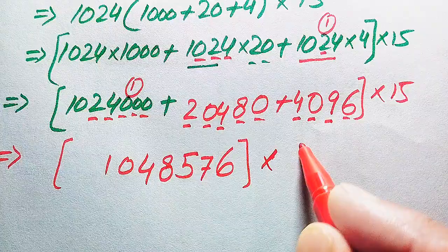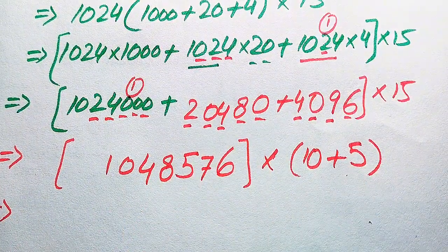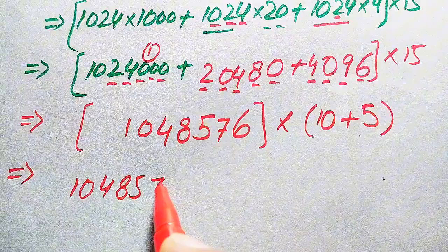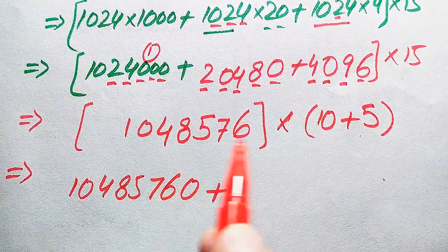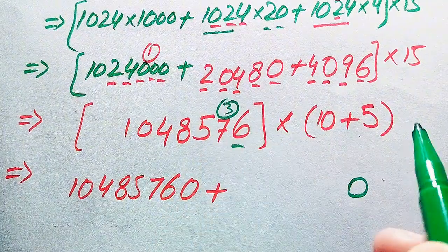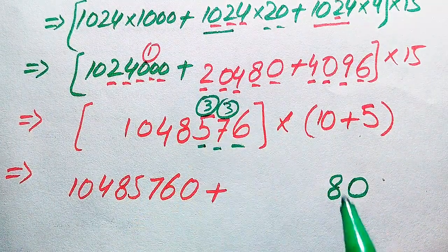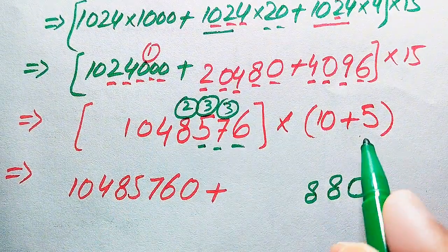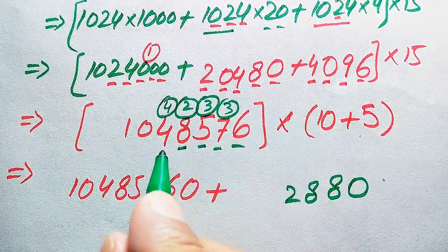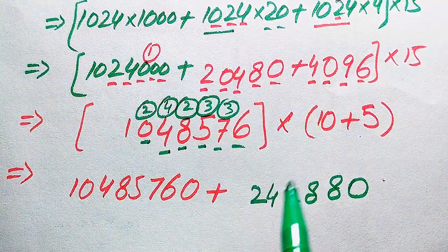We break 15 as 10 plus 5 and multiply 1,048,576 separately by each. Multiplying by 10 gives 10,485,760 — we simply add a zero. Multiplying by 5: 5 times 6 is 30, write 0 carry 3; 5 times 7 is 35, plus 3 is 38, write 8 carry 3; 5 times 5 is 25 plus 3... continuing through all digits, giving 5,242,880.